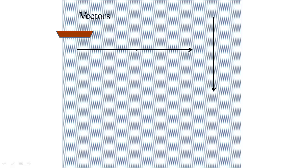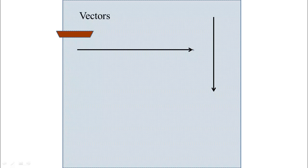We're rowing in a particular direction and the length indicates how fast we're going. Say the current is going at 4 miles an hour and we can row at 6 miles an hour. We could ask ourselves: what direction will we actually go if we're moving through the water while the water is also moving? It makes sense to add them. If we row for an hour we will have gone 6 miles, so we have a velocity of 6 miles per hour, and during that same time the water carries us along.